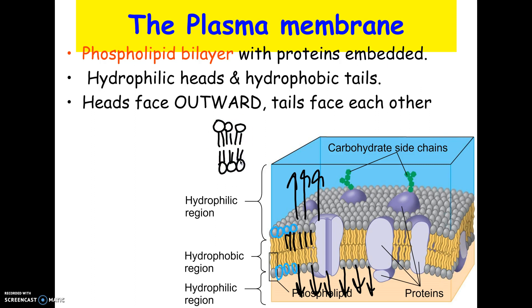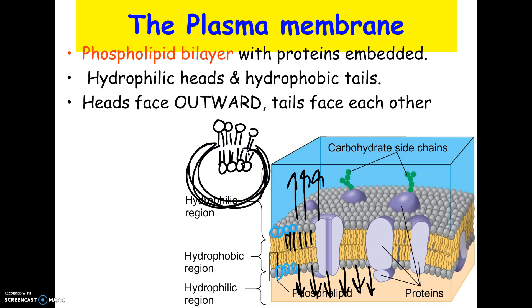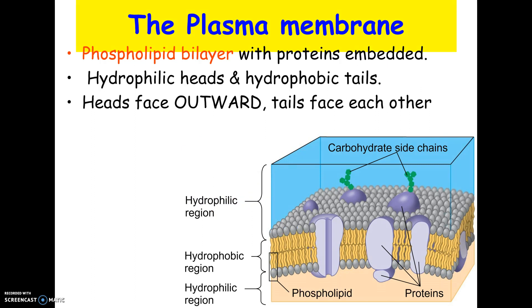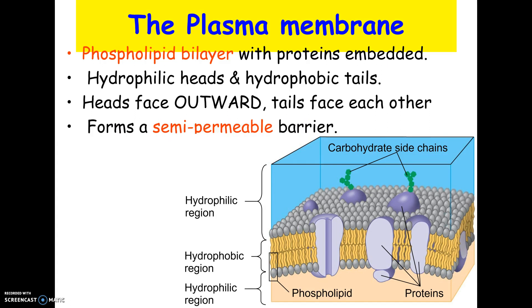The fatty acids would be attracted to each other and the phosphates would be attracted to the water, and you'd basically end up with what's called a micelle — that's what would happen if you dropped phospholipids in water, they'd arrange themselves that way. The job of the cell membrane or phospholipid bilayer is that it is a semi-permeable barrier, meaning it controls what enters and leaves the cell.